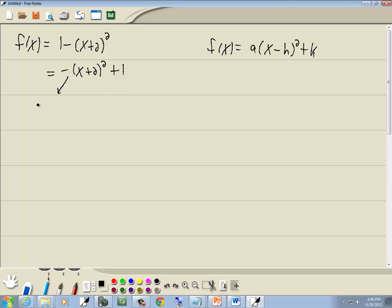Now remember, a is what's in front of our parentheses, which is the invisible one. So we've got a equals negative 1, which means our graph opens down. Our h is what's with our x, but it'll be opposite sign, so it'll be negative 2. And our k is the number at the end, which would be 1.